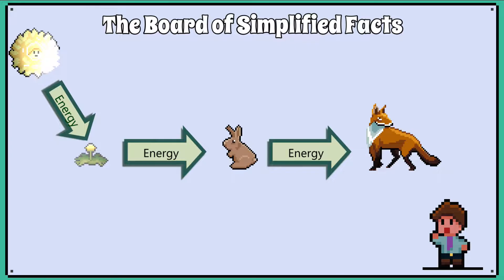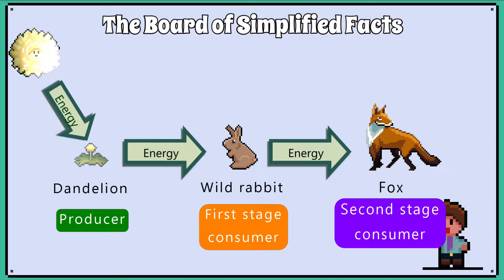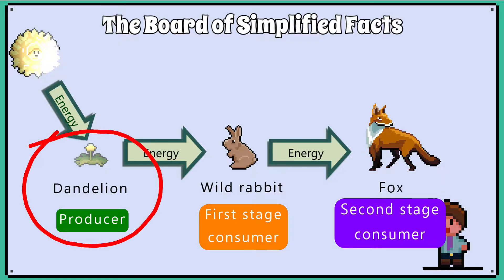We will use a simple example where we have the dandelion plant, which is consumed by the wild rabbit, and the wild rabbit is being consumed by the fox. At the bottom of every food chain is an organism that can make its own food, and we call this the producer.